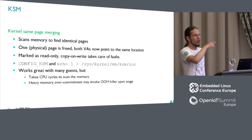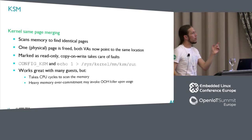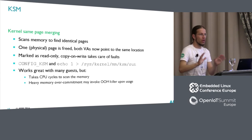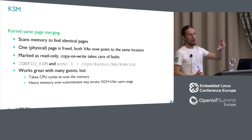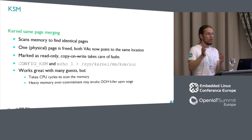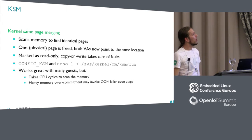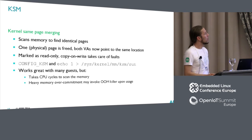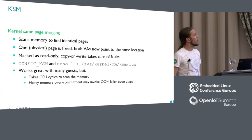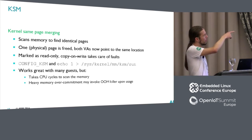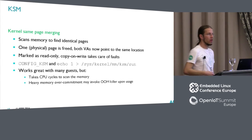KSM is a kernel feature that can save memory this way. When it finds identical pages and links them together, it marks them as read-only and enables copy-on-write. So as soon as a guest writes to one of those pages, the copies are split again — there's no chance that one guest can interfere with another. To enable it, you need CONFIG_KSM in the kernel config — it should be on in most distribution kernels. And because it uses CPU, you have to enable it explicitly by echoing 1 into /sys/kernel/mm/ksm/run.